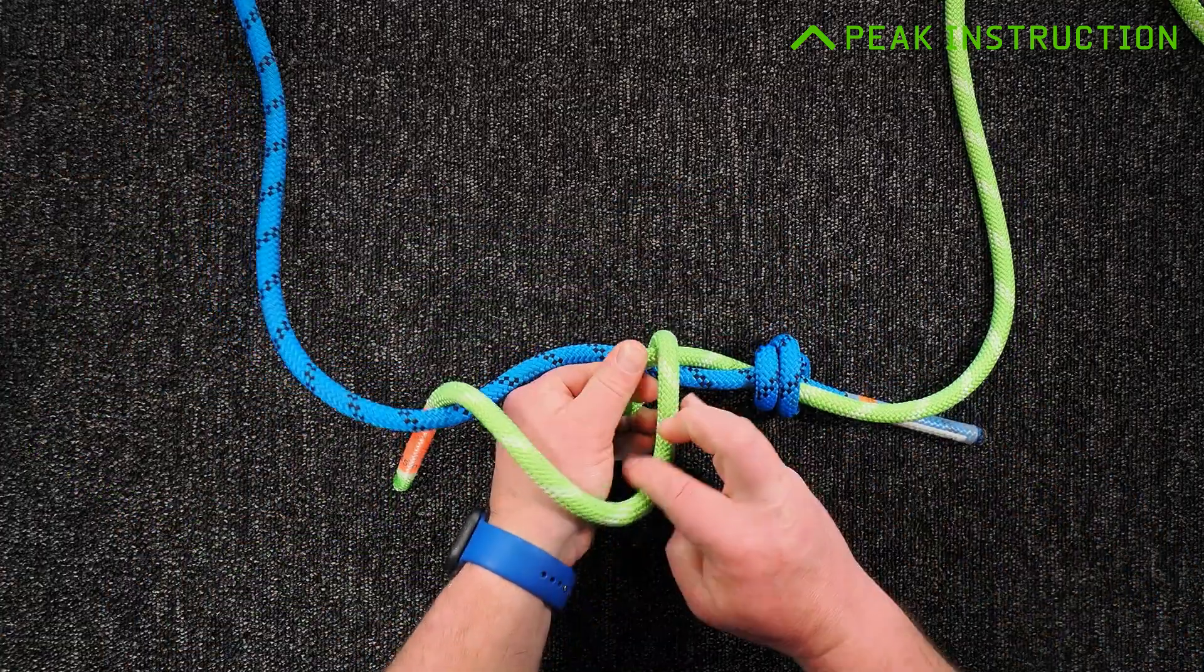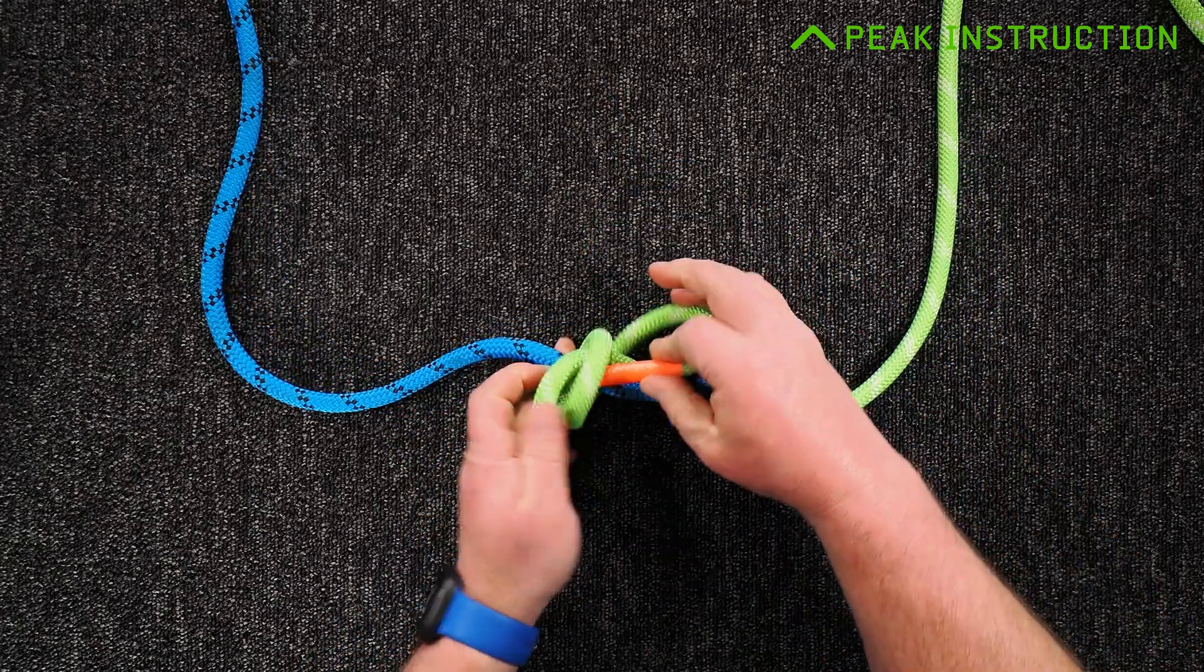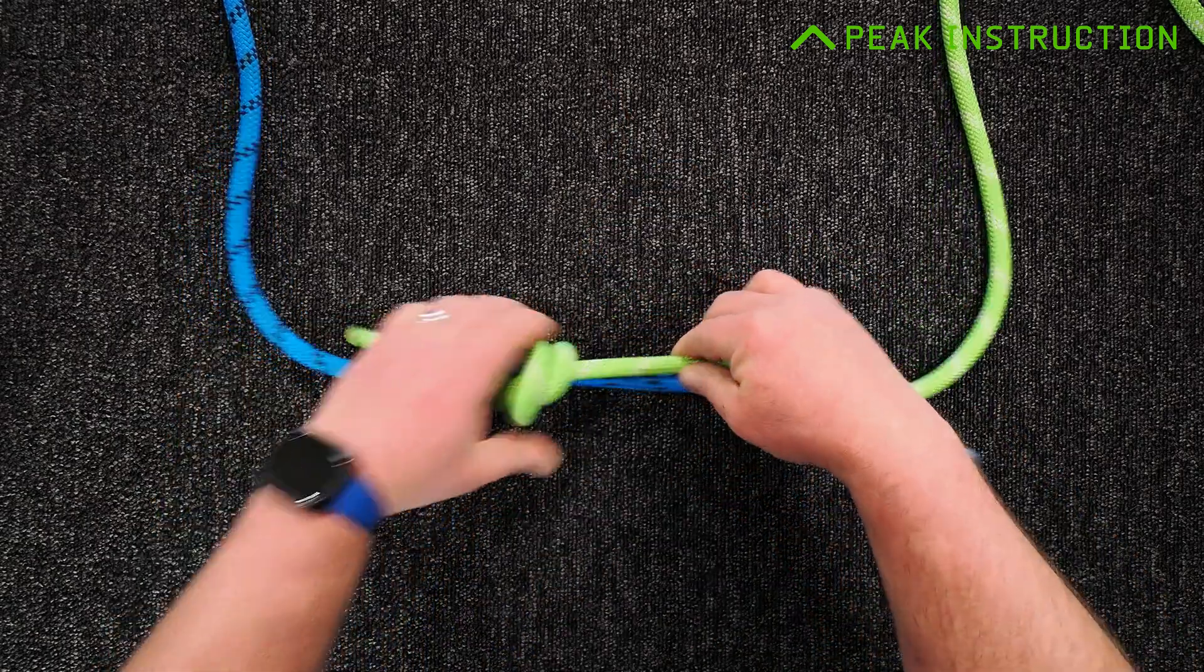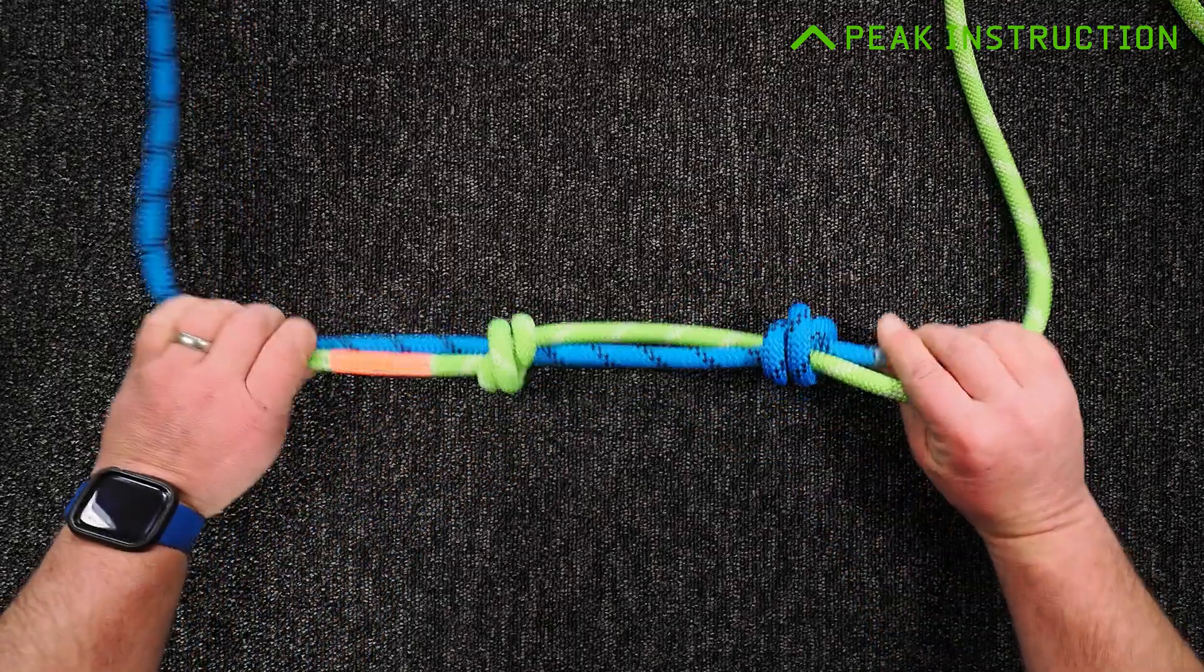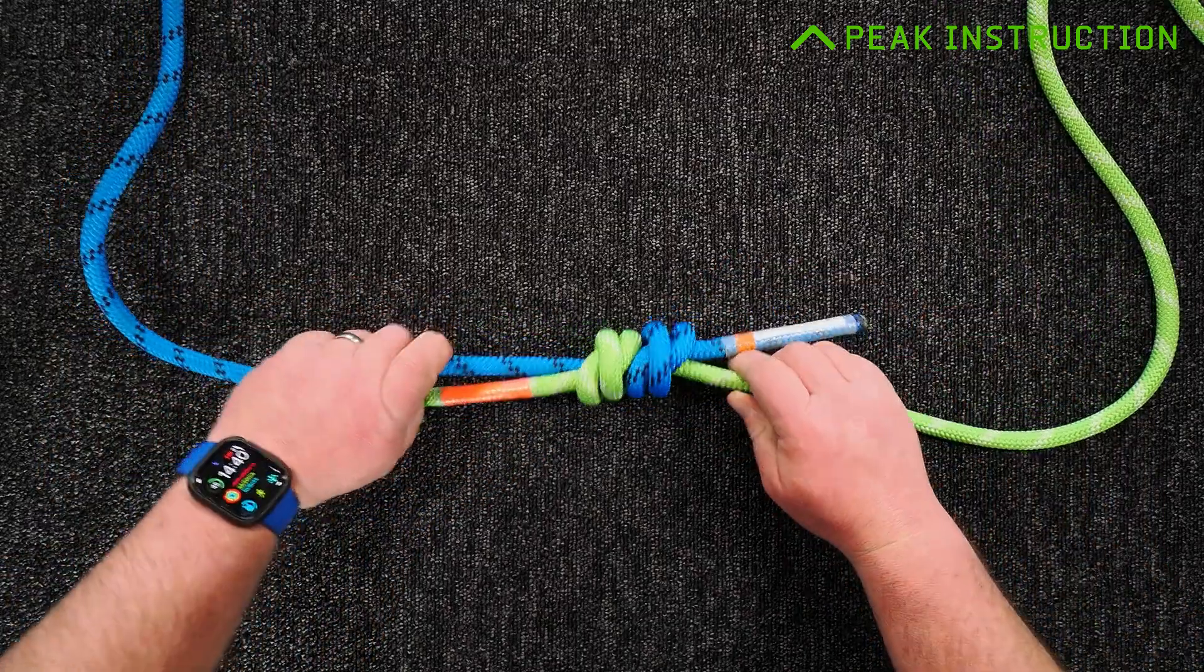And then another double overhand stopper tied in the opposite direction around the other piece of rope. Pull those together, they cinch together.